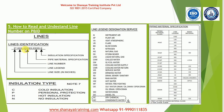The line number is a specific number provided by the piping team for their identification of which line it is. Instrumentation engineers need not focus on this line number, as it does not provide useful information for instrumentation purposes.